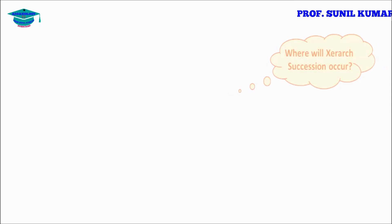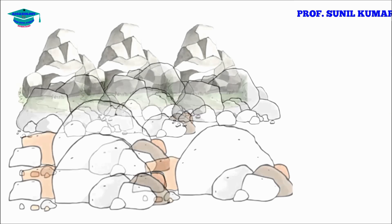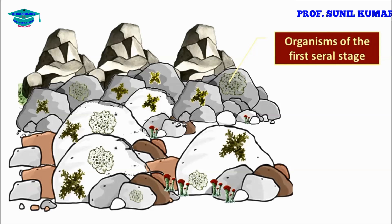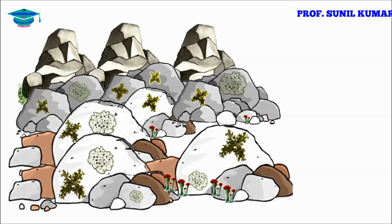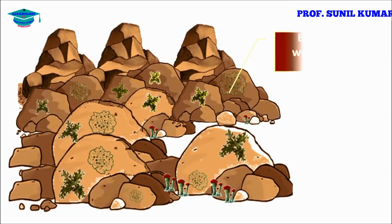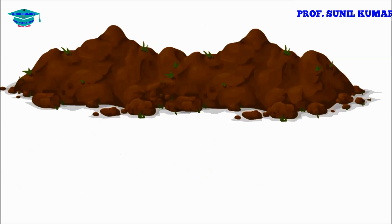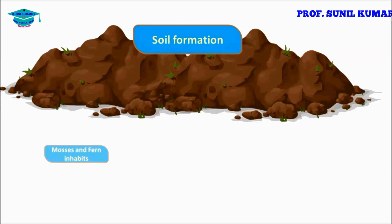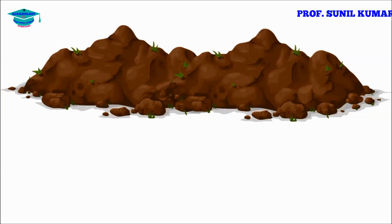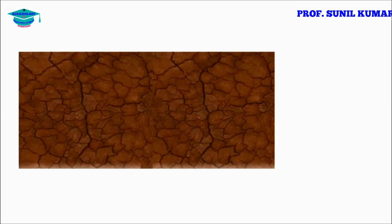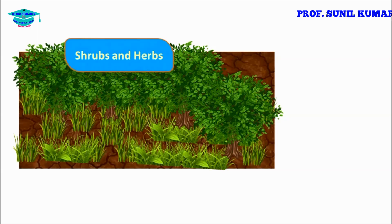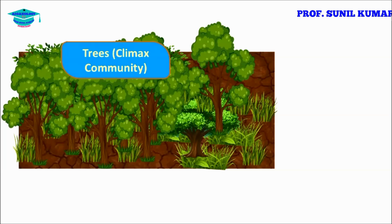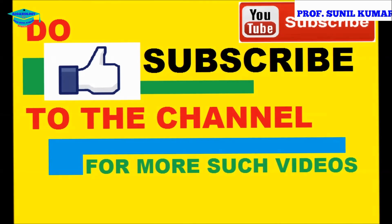Xerarch succession occurs in desert areas with very little water on bare rocks. Algae cannot grow there, so lichens become the pioneers of xerarch succession. Lichens produce acid that causes weathering of rocks, breaking them into pieces to form soil. This soil leads to the growth of mosses, ferns, and small plants, followed by small grasses, then shrubs and herbs, with the tree community as the final climax community.